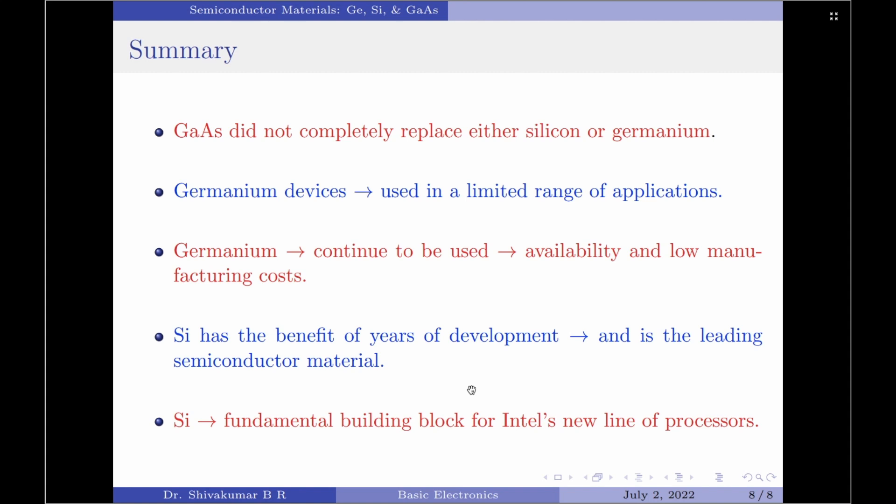Silicon, in fact, has the benefit of years of development and is the leading semiconductor material for electronic components as well as integrated circuits. If you search on the internet, you will find that silicon is still the fundamental building block for Intel's new line of processors, which are very widely used in computers today.